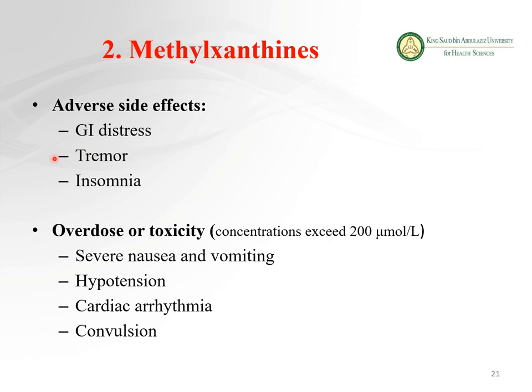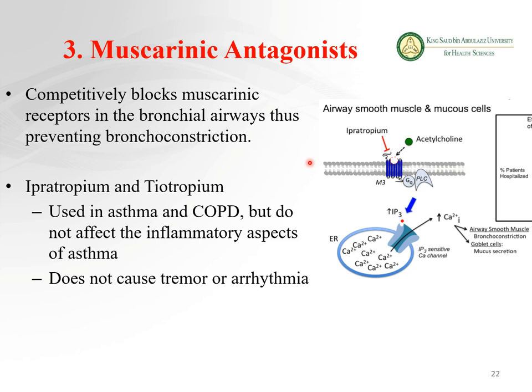Adverse effects of methylxanthines include GI distress, tremor, and insomnia because they are stimulants — similar to caffeine. Overdose or toxicity causes severe nausea and vomiting, hypotension due to vasodilation, cardiac arrhythmias, and convulsions.